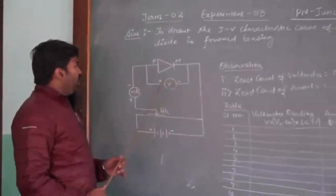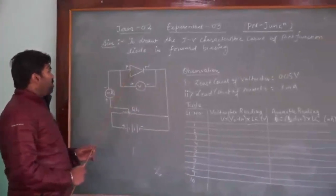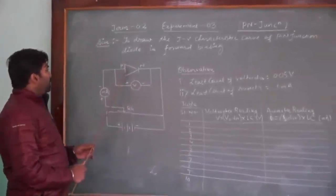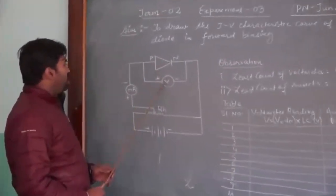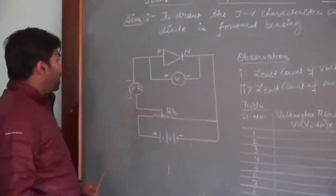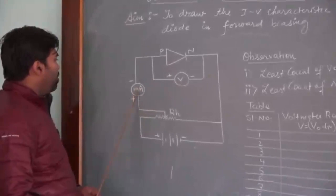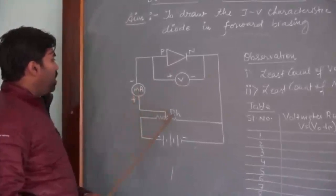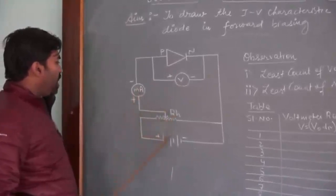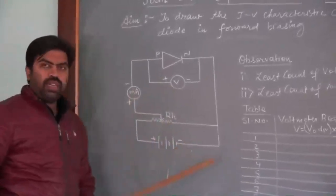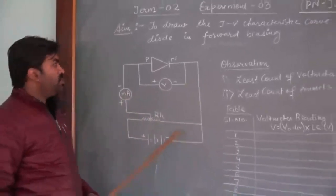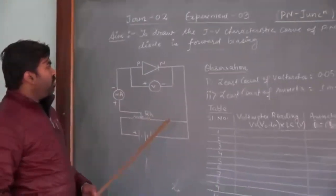You can see what apparatus are required: the P-N junction diode, the voltmeter, the milliammeter, the rheostat, and a battery eliminator.